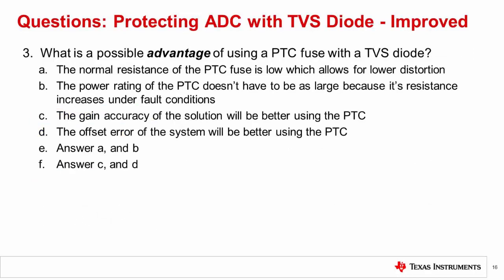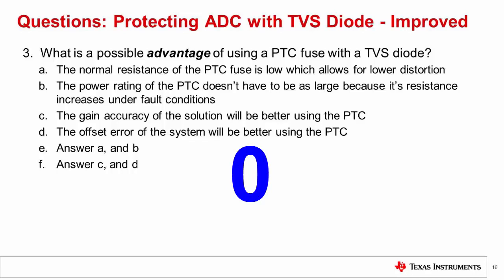Question 3: What is a possible advantage of using a PTC fuse with a TVS diode? The correct answer is E, both A and B. Remember, distortion is caused by an interaction of the series resistance with the nonlinear capacitance of the TVS diode, so a small resistance PTC fuse will minimize the distortion. Also, the PTC's resistance increases under a fault condition so that a lower power rating in a smaller physical device can be used.